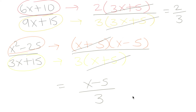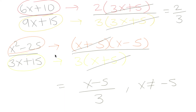We have our 3 in the denominator and we're left with x minus 5. One more thing we need to add to this final answer is a condition: x cannot be equal to negative 5. The reason is that in the original expression, the denominator becomes 0 when x equals negative 5, making it undefined. But the simplified expression x minus 5 over 3 is not undefined at negative 5, so we must add this condition to make the two expressions equivalent.